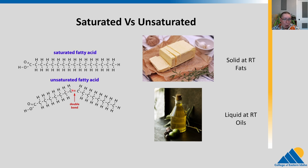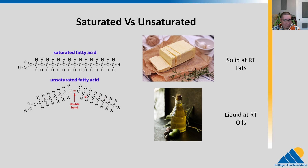An unsaturated fat has a double bond between two carbons. A double bond was formed when they share two electrons with each other. So there could have been hydrogens, but instead they double bonded together, meaning it is not saturated with hydrogens. You can see that there is now a kink, a bend in the molecule — that changes its shape and gives it different properties. Saturated fats are going to be solid at room temperature, like butter. Whereas unsaturated fats, because of that kink in the molecule, are liquid at room temperature.